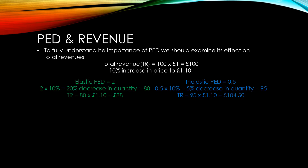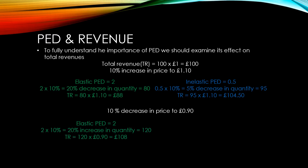Now let's consider the case of a 10% decrease in price from £1 to £0.90. With an elastic PED of 2, the 10% decrease in price leads to a 20% increase in the quantity demanded. We can see that when we sell 120 muffins for £0.90 each, we make £108, so our revenue has increased from £100 to £108.